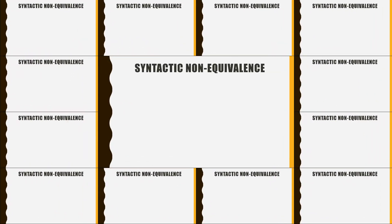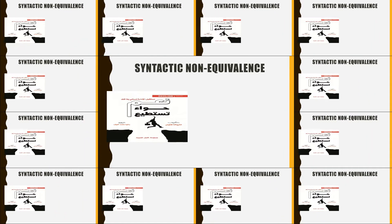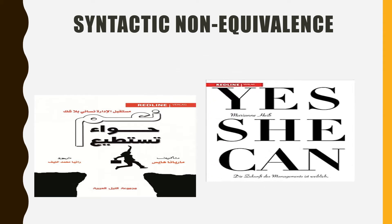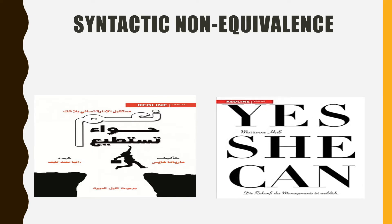Let's look at the translation of the following book title. The original title reads 'Yes She Can.' The English pronoun 'she,' which exclusively refers to women, in this title can refer to either a man or a woman if translated. If attached to the verb as a prefix, it could mean 'Yes You Can.'